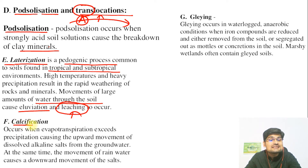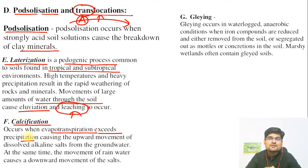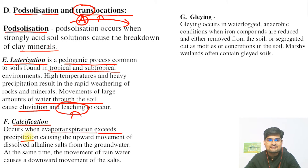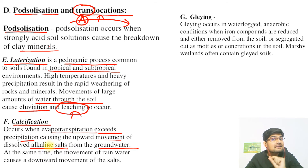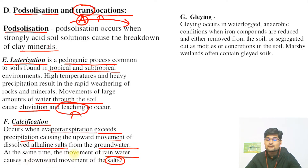Then we have calcification. As the name suggests, it involves calcium. It occurs when evapotranspiration exceeds precipitation — in areas with high temperatures, evaporation is high and transpiration through plant leaves is also very high, but precipitation is less. In such environments, there is upward movement of dissolved alkaline salts like calcium salts from the groundwater, and calcification occurs. There is a deposition of calcium carbonate in the soil, increasing the alkalinity of the soil. At the same time, the movement of rainwater causes a downward movement of these salts as well in many parts of the world.